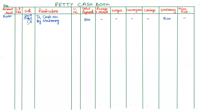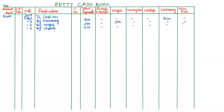Next is July 6 — paid wages and charity. By wages, 500 rupees will come in the total payment column as well as the wages column. Next, charity on the same day — by charity, the amount is 300 rupees, so 300 rupees goes in the total payment column. We do not have a separate column for this, so 300 rupees charity will come in the miscellaneous expenses column.